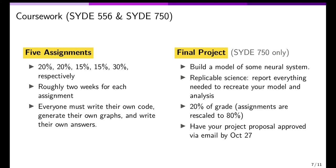How will we evaluate this course? There are five assignments. They are all assignments where you'll write your own code, generate graphs, and write your own answers. Please talk with friends, collaborate, and discuss the assignments with people in the class — but everyone must submit their own assignment with their own code and their own graphs. Those five assignments will be the core evaluation for the course.